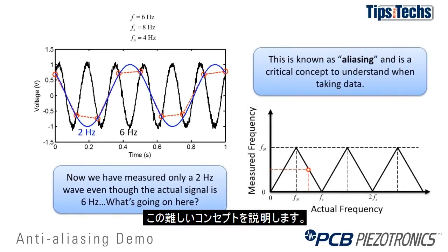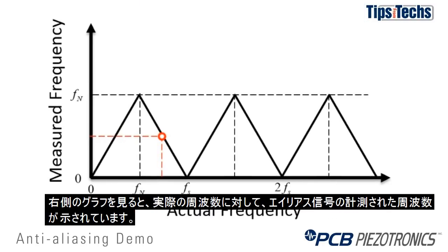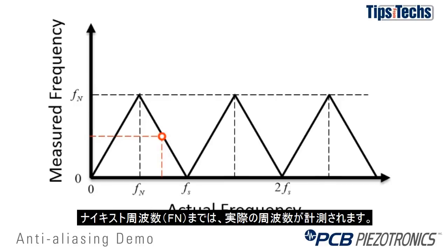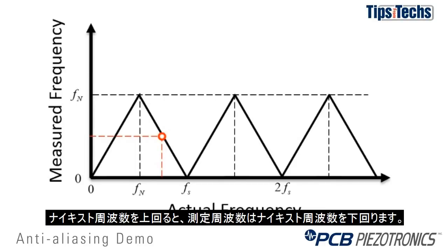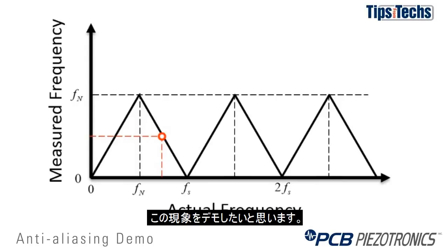This is a difficult phenomenon in data measurement. If we look at the plot on the right, you can see the actual frequency versus the measured frequency for an aliased signal. Up to the Nyquist frequency, or F sub n, you will measure the actual frequency. Above the Nyquist frequency, you start to measure frequencies below the Nyquist frequency. So as you increase in frequency, the observed frequency is actually decreasing, and that's what we'll demonstrate.